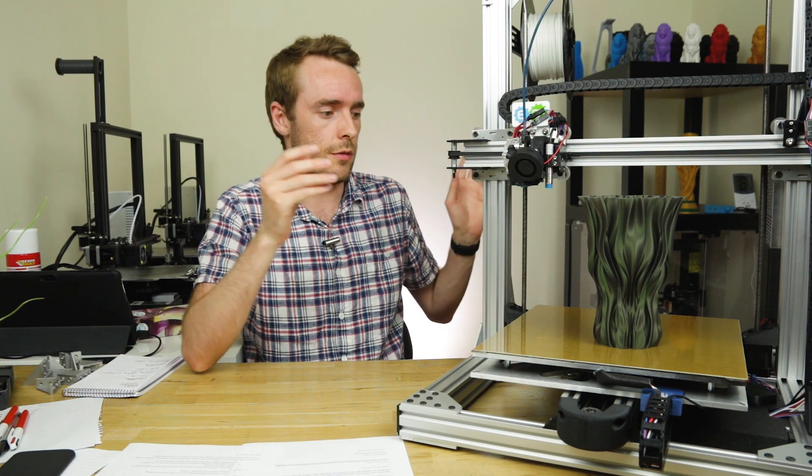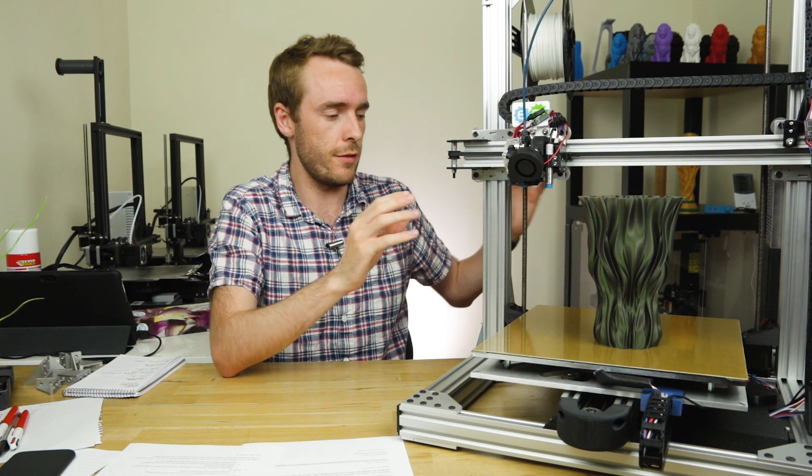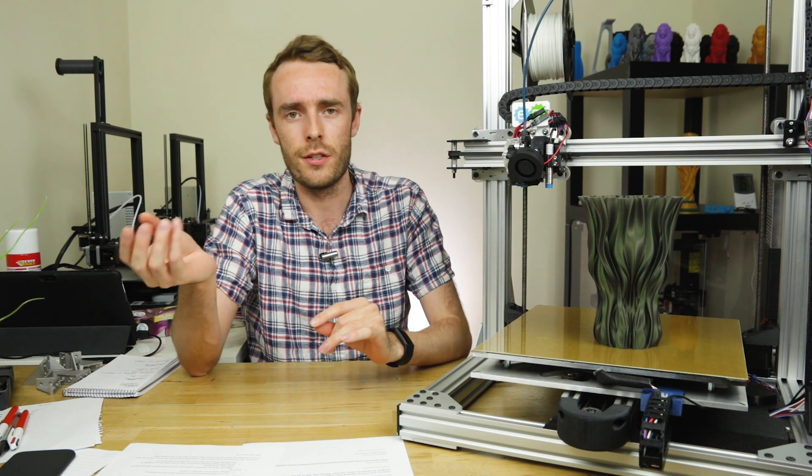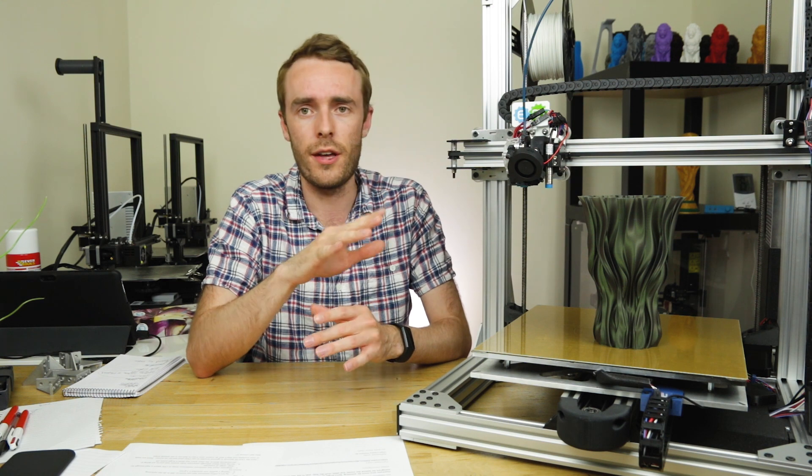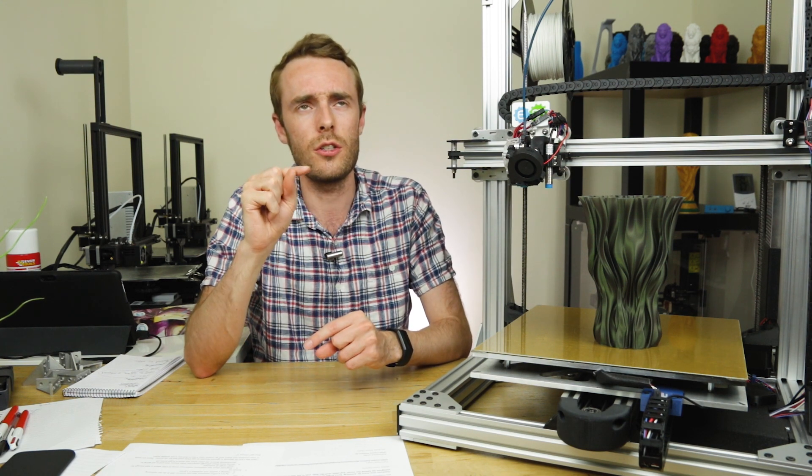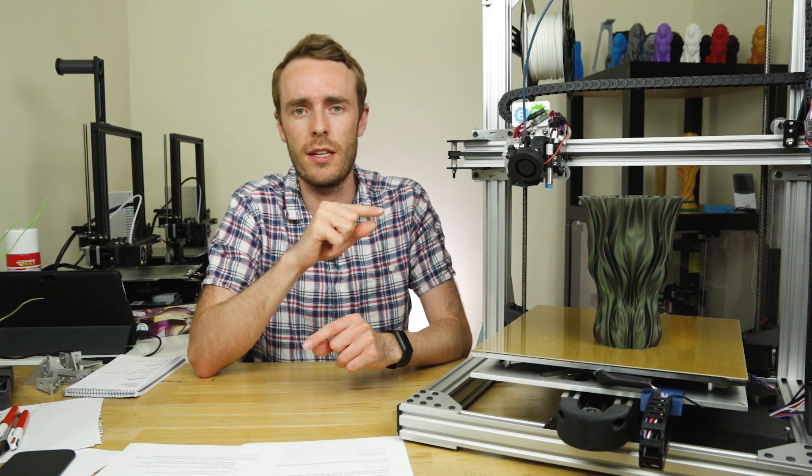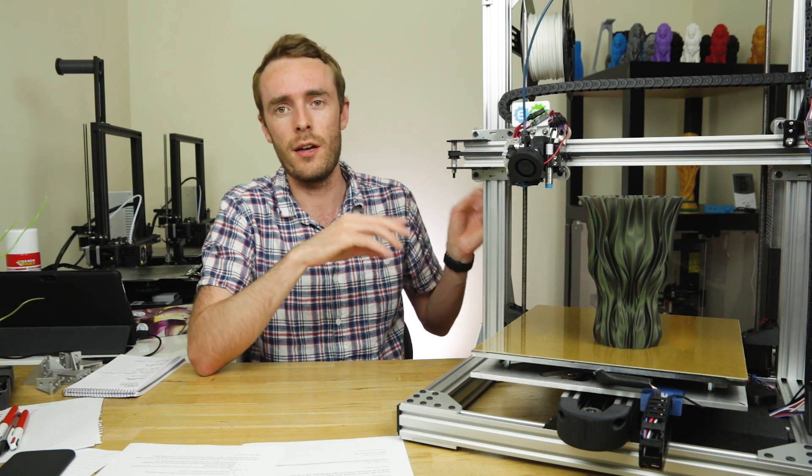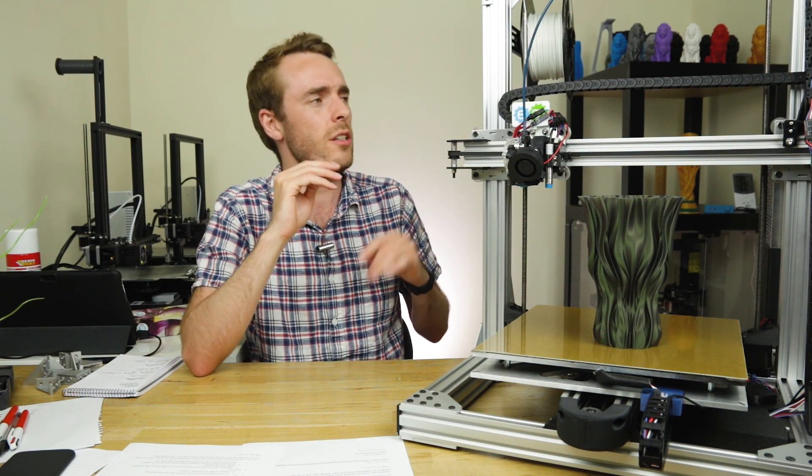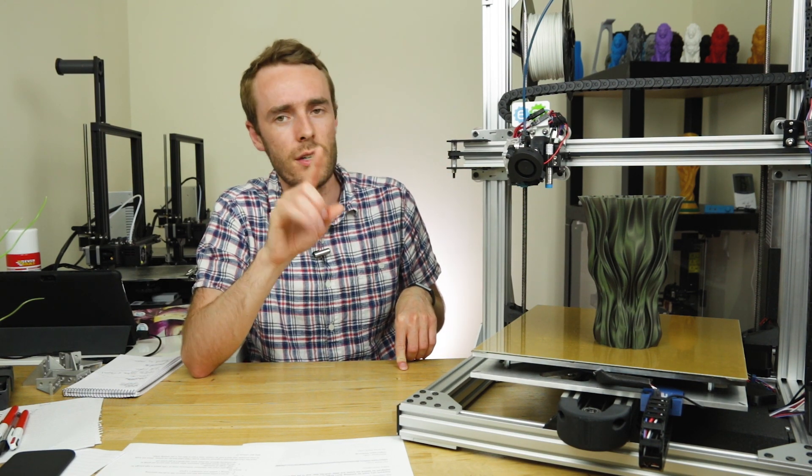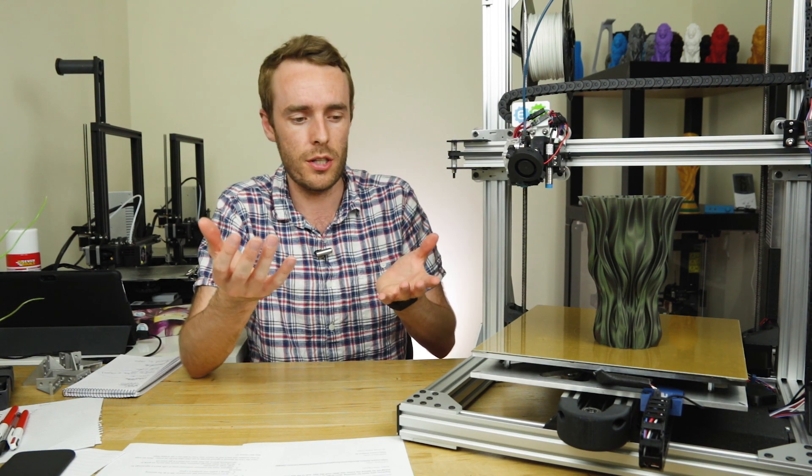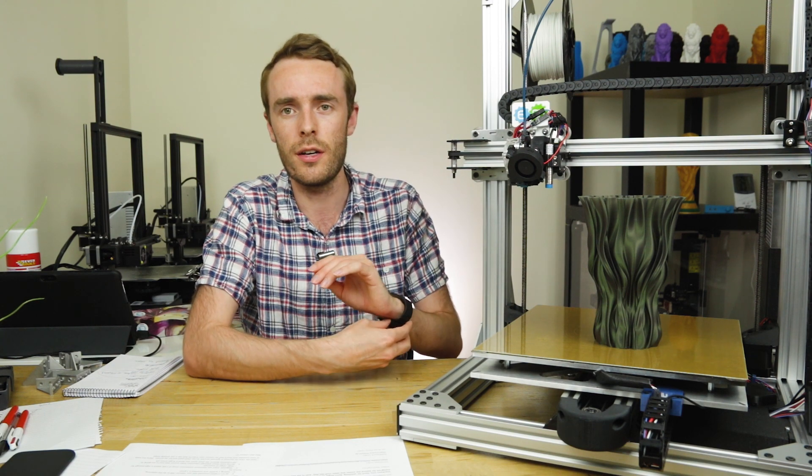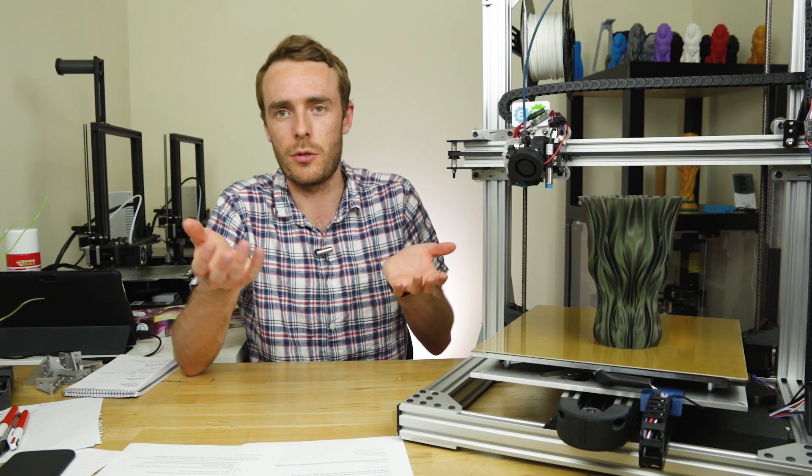So why did I choose Filafarm for the bed assembly for this printer? Well, there are a few reasons. Firstly, I've used them before. I used them on Steve for the bed and heater and stuff like that on that printer. Actually, no, I didn't use the aluminum plate from them, I made that myself from a supplier in the UK, but the whole heater, and did I use the print surface, don't think I did, but I did use the heater from Filafarm. So I'd used them before and the quality was good, I didn't have any real issues with it, so that was great. Why not go back to someone who you've used previously?